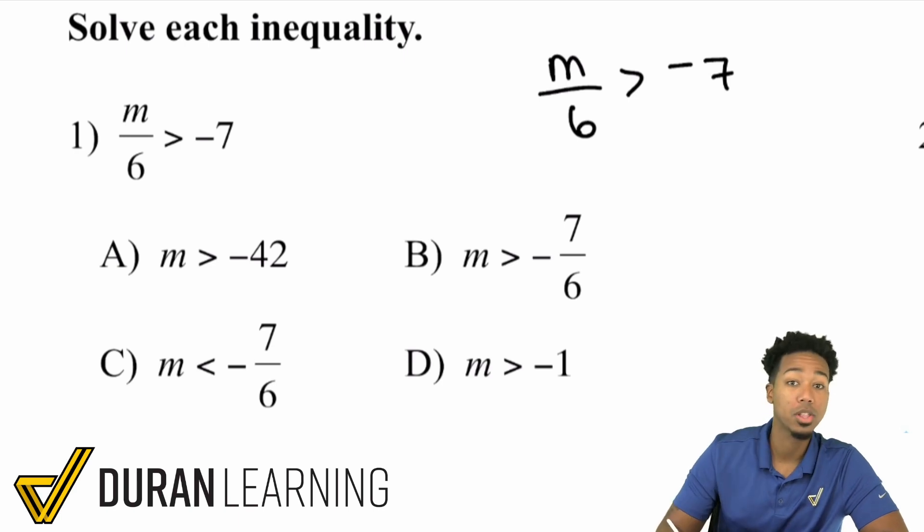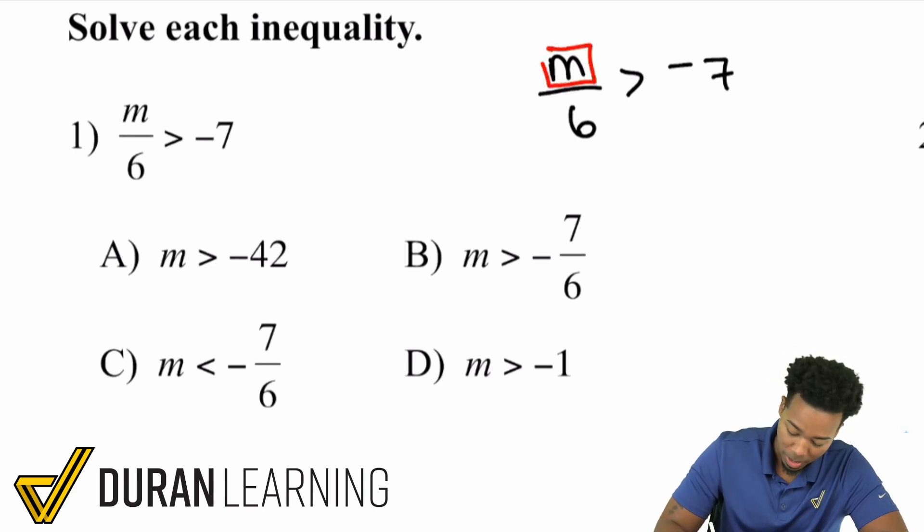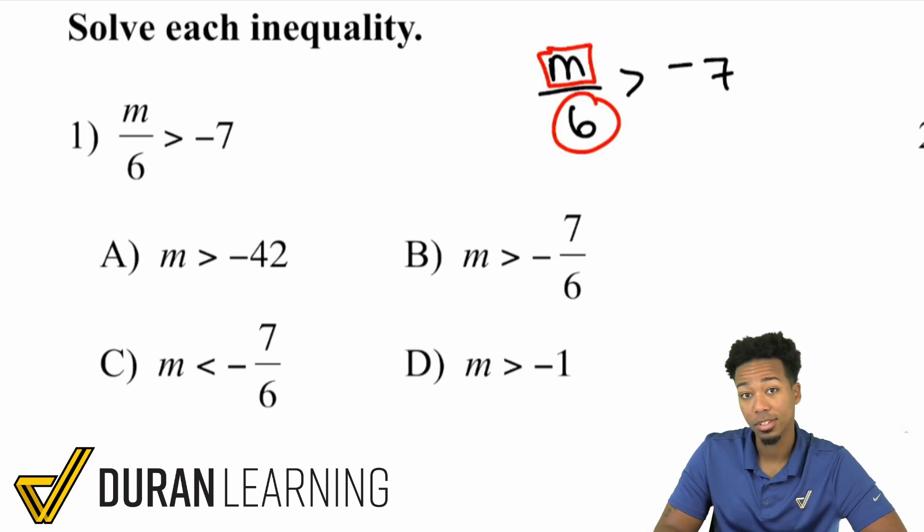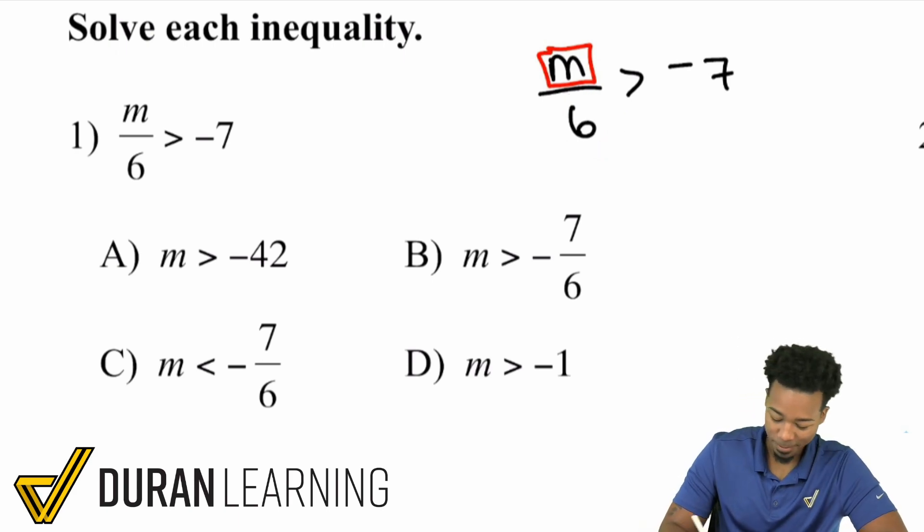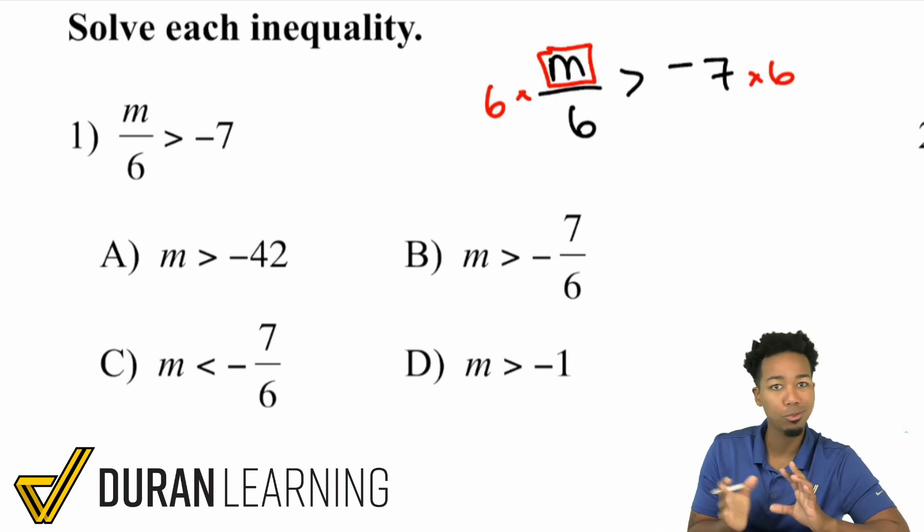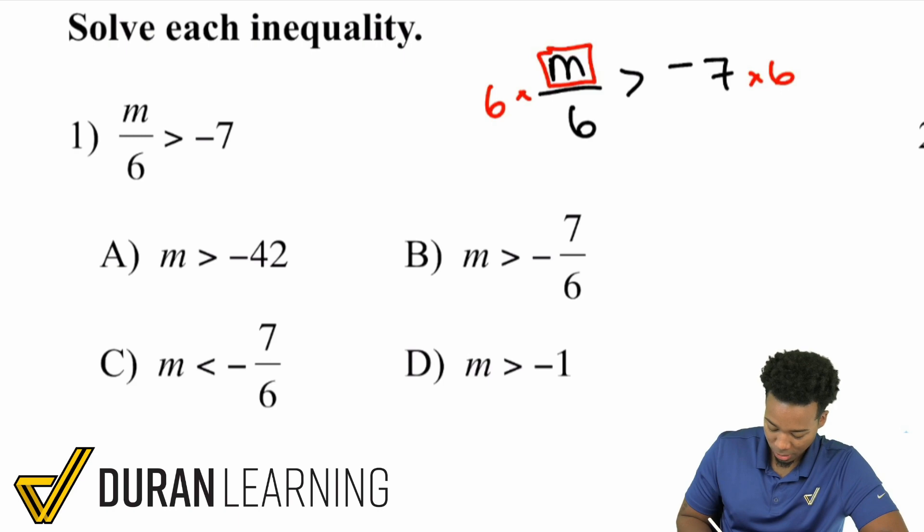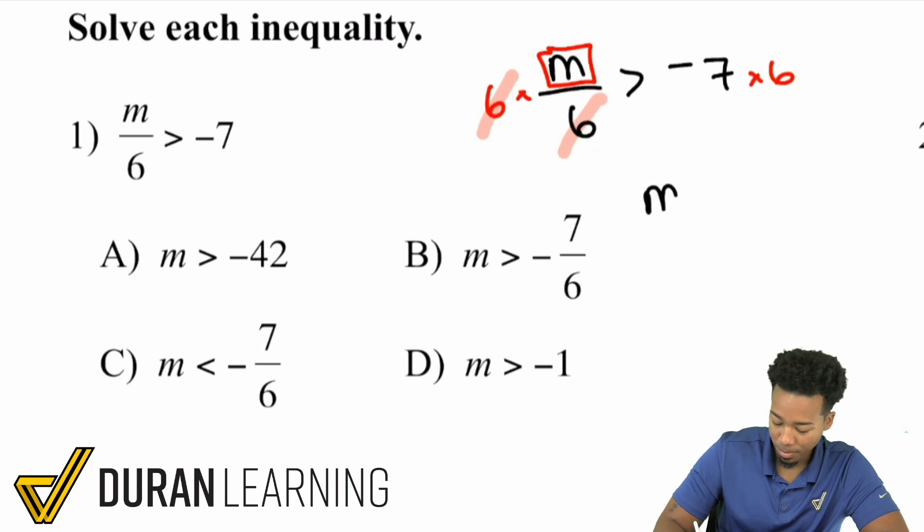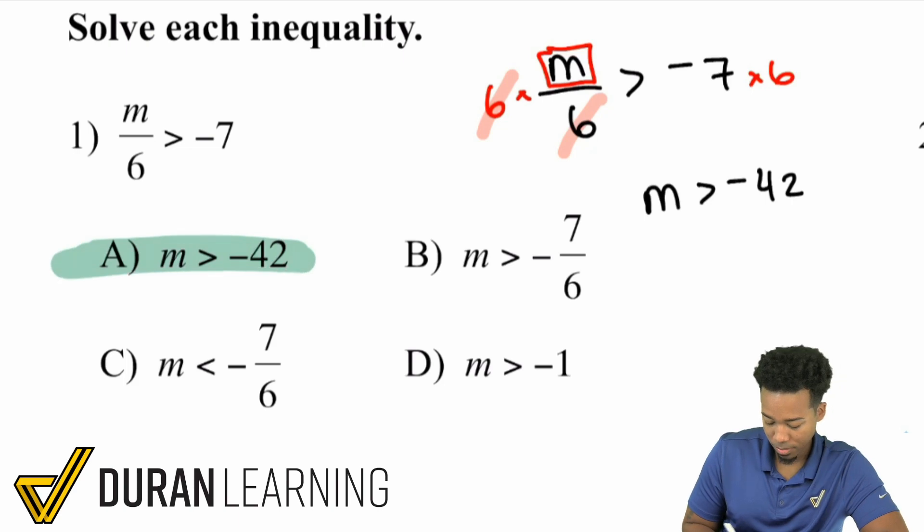Just like with a regular equation, we're going to get the variable by itself by doing the opposite operation. So if we're dividing by six here, we'll be multiplying by six on both sides. And so look, that was a positive six that we multiplied. So no changing needed. We're just going to have ourselves the cancellation on the left, just like we do with equations. And we have m is greater than negative 42. And there's our answer right there, a.